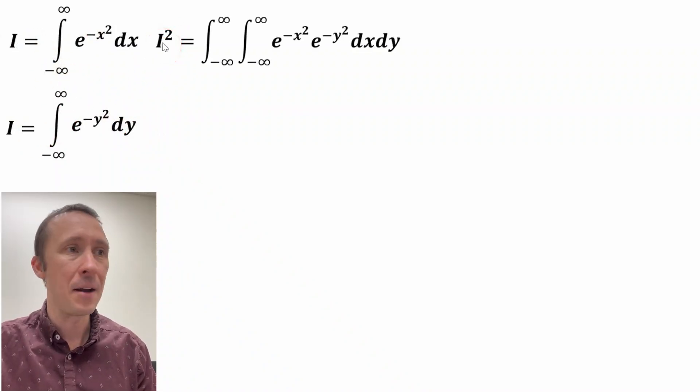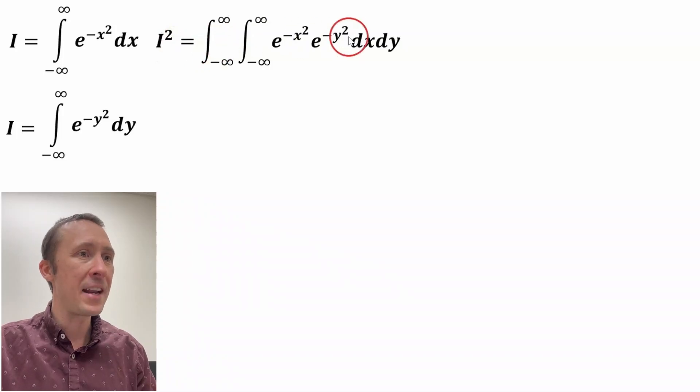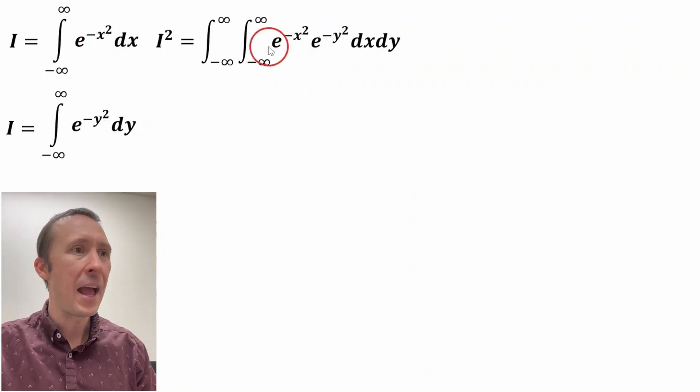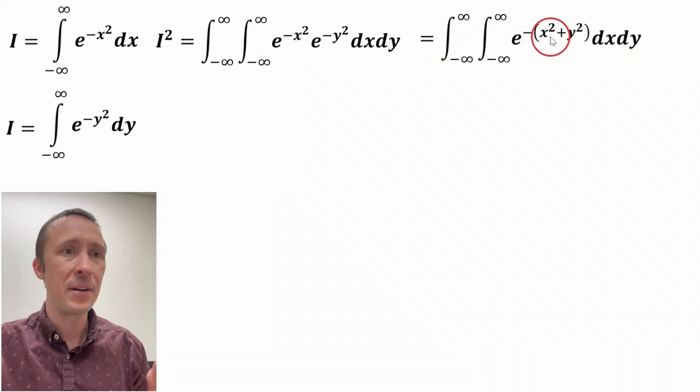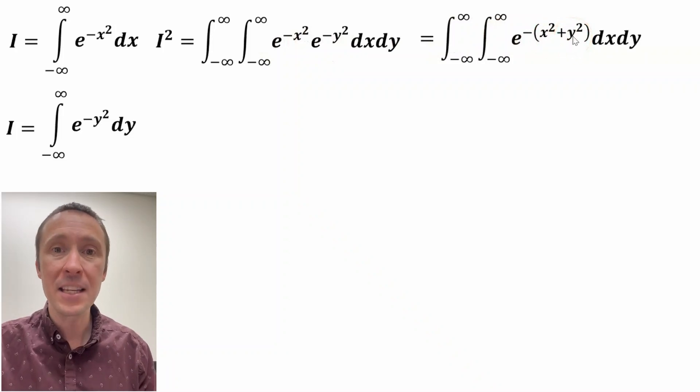The left-hand side becomes I squared and then the right-hand side is these two multiplied together. We could move things around because they're multiplied together. So this is the integrand here. And now if we invoke the exponent law, we can add the exponents. So negative x squared plus y squared.